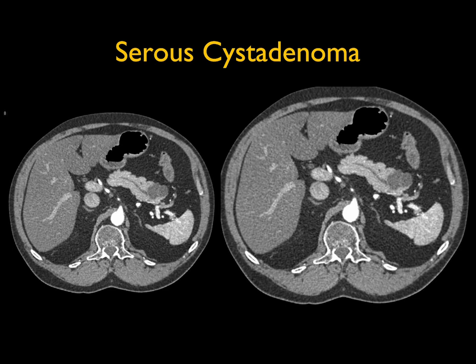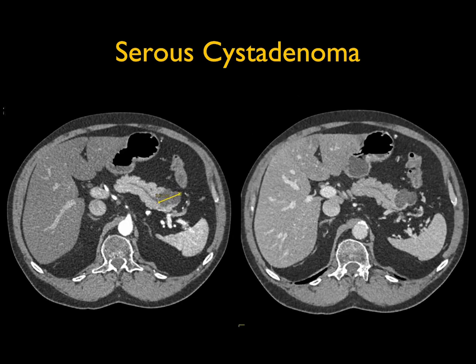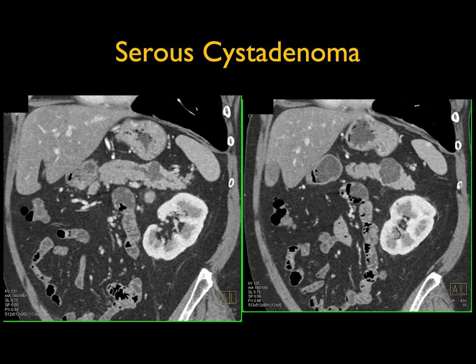Case five: a cystic lesion in the tail of the pancreas with a mildly dilated pancreatic duct. Could it be an IPMN? Could it be a mucinous cystic neoplasm (MCN)? MCNs usually have no dilated duct — a dilated duct pushes you more toward IPMN. This lesion is somewhat cystic with thin septations, about three centimeters. On coronal view, when I see thin septations I'm thinking MCN, particularly in a 40-ish-year-old female in this location.